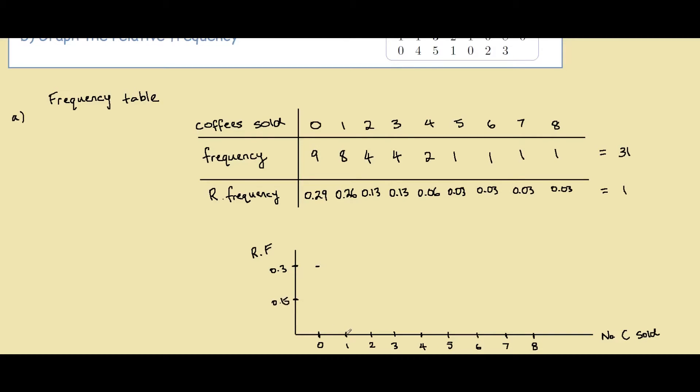For 1 we have 0.26 which is around here. For 2 we have 0.13 around here. Likewise for 3, 0.13. For 4 we have 0.06. And for 5 all the way to 8 we have 0.03.